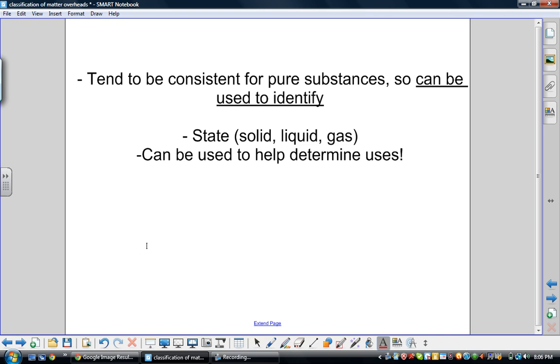Physical properties are usually consistent for pure substances, not for mixtures, so you can use them to identify. If you find a substance that's pure, you don't know what it is, you can mark down its color, its density, its melting point, you can look it up in a book and find out what material it actually is. The state of matter that a substance is in—is it a solid, a liquid, or gas—is a physical property.